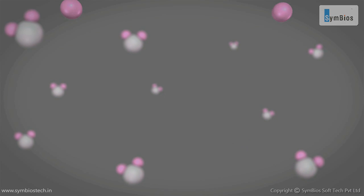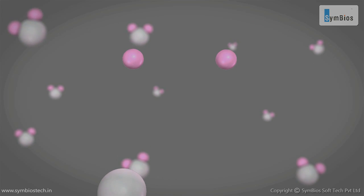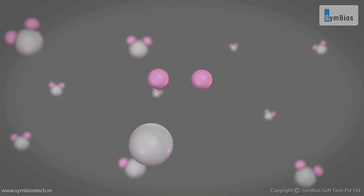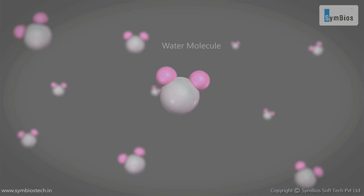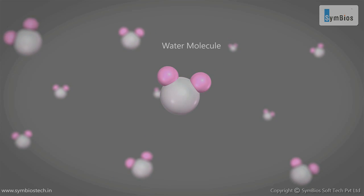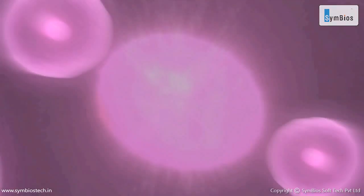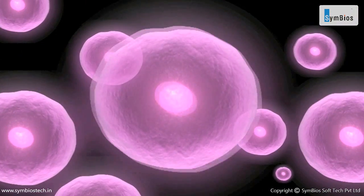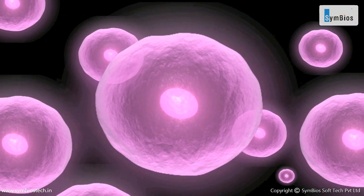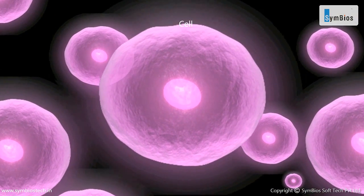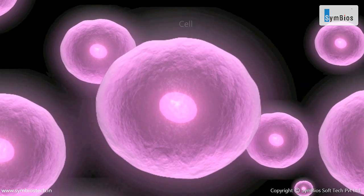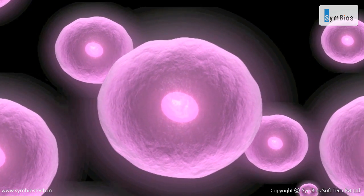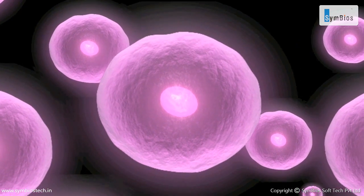For example, when two atoms of hydrogen combine with one atom of oxygen, they form a molecule of water. Molecules combine to form the lowest level of living organisms — the cell.